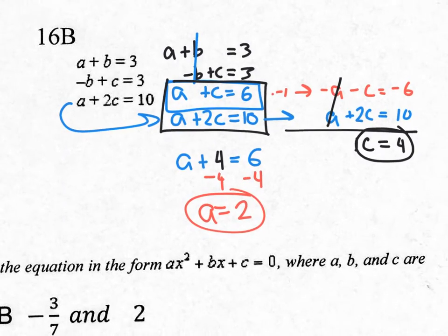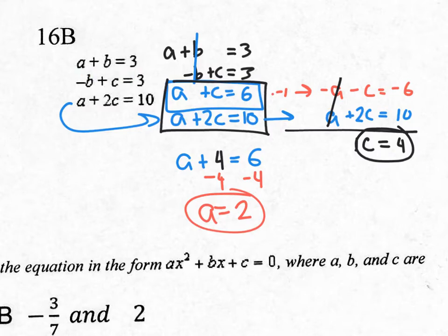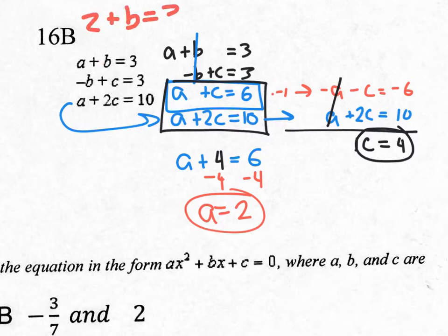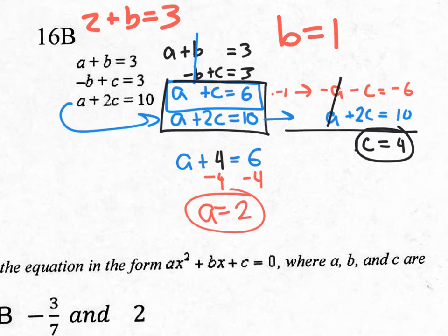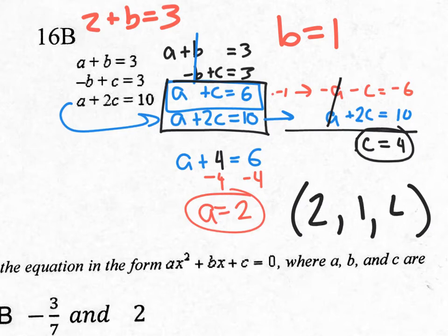Going back to the original equations, I need one that has a B. I can't use the bottom one. I can use the top or middle equation — let's go with the top. Instead of A plus B equals 3, I substitute A equals 2: 2 plus B equals 3. So B equals 1. The ordered triple, putting A, B, C in order, is 2 comma 1 comma 4.